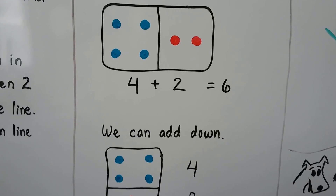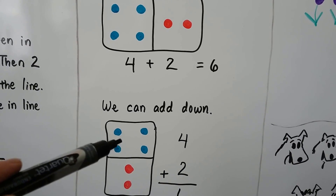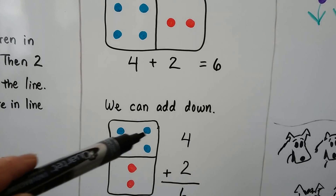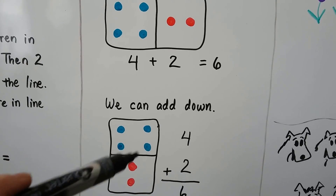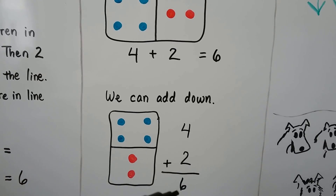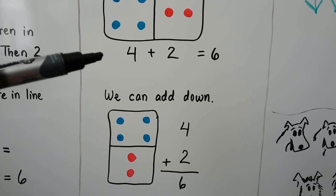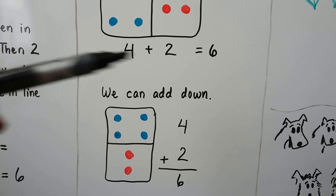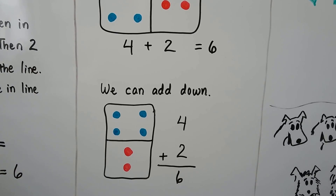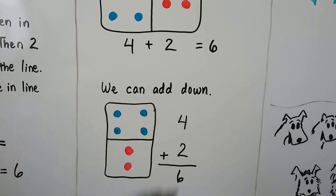And we can add down. Four blue dots and two red dots — one, two, three, four, five, six. Four plus two is six. Our equation can go across like a sentence, or it could go down. It'll still equal the same thing. See?